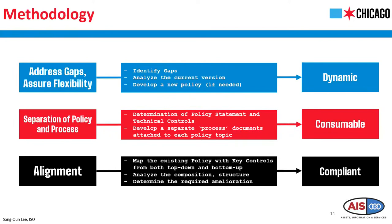Third is about alignment. We are here to build and revise our new policy. We first map the existing policy with key controls from both a top-down and bottom-up level. Then we analyze the composition and structure to determine which parts of controls are underrepresented and which are overrepresented. By doing so, we can identify the policies required for improvement, and not only improve the policy but also ensure compliance with any requirements we are adhering to.